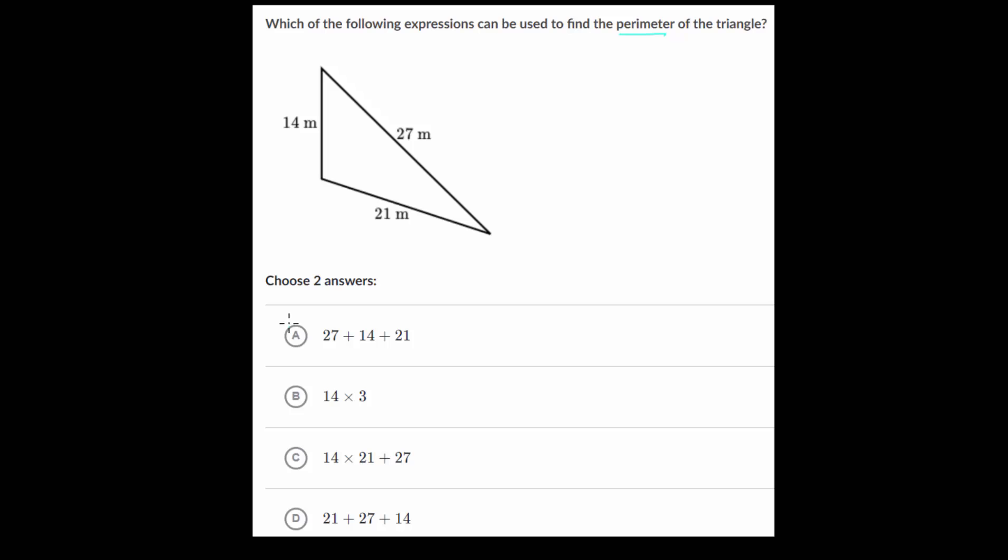Let's look at our answer choices. Two of these should be right. 27 plus 14 plus 21—that one is correct. We're just adding the side lengths. This one is multiplication. We don't have anything involving just 27 and 21.